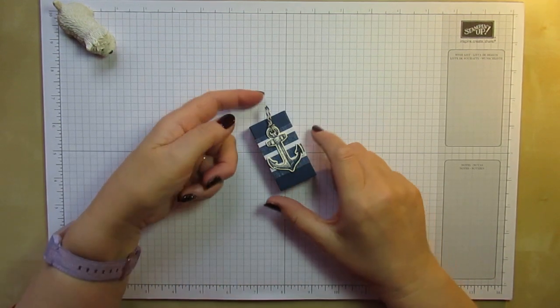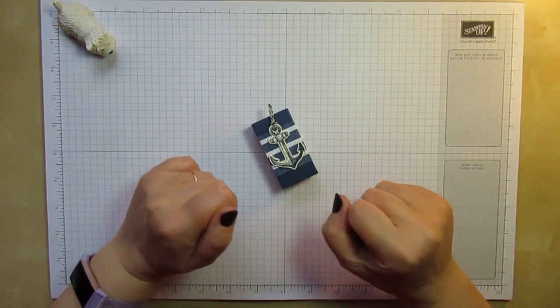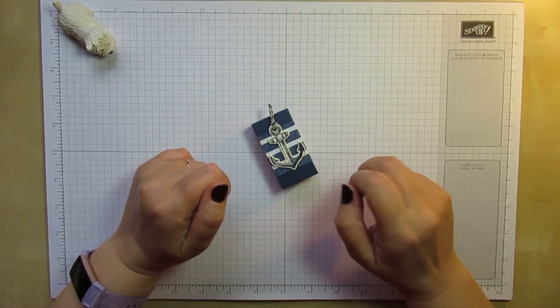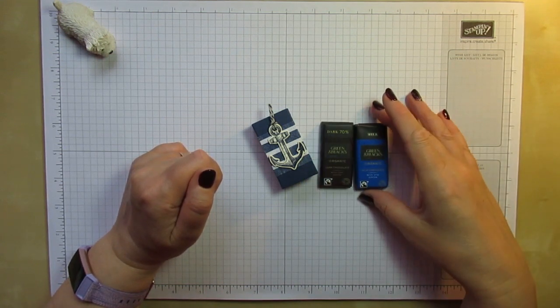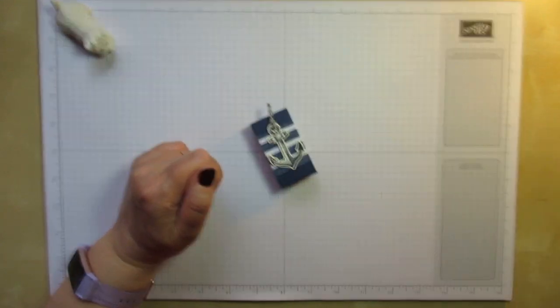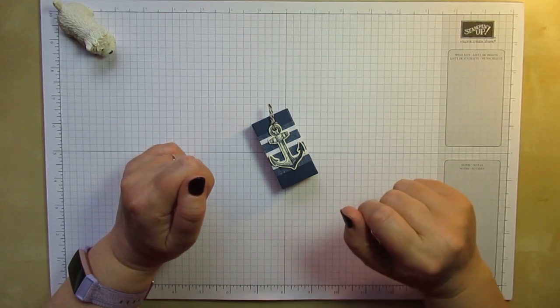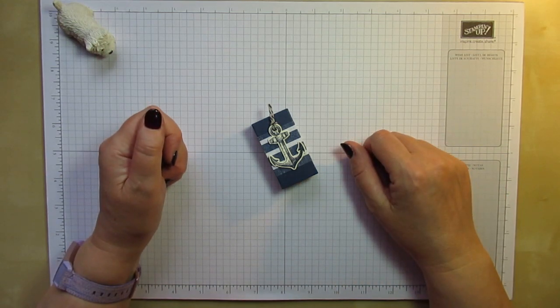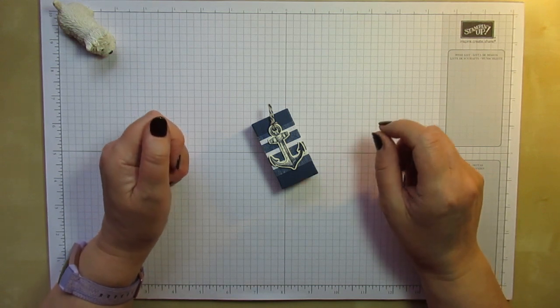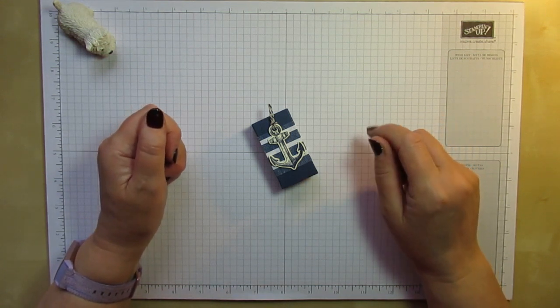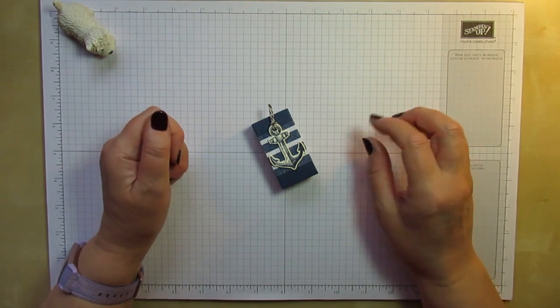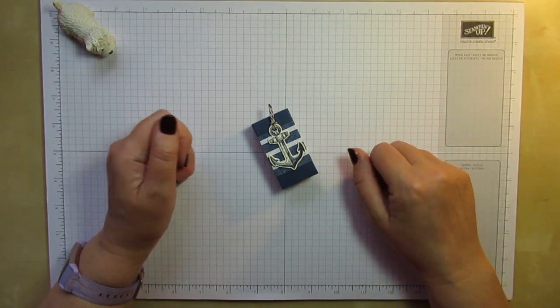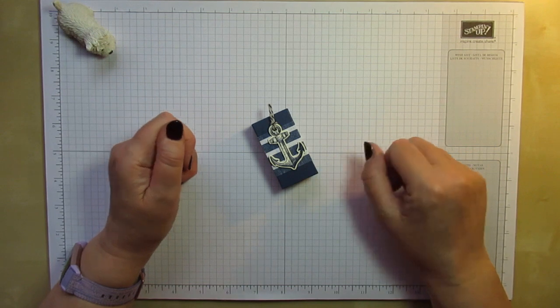Today I thought I'd show you how I made this dinky little box. It holds two Green and Blacks organic chocolates, and I made it using some of the new products from the new Stampin' Up Annual Catalogue which launches in just a couple of days now. I'm filming this on the Sunday before the catalogue goes live on Tuesday.